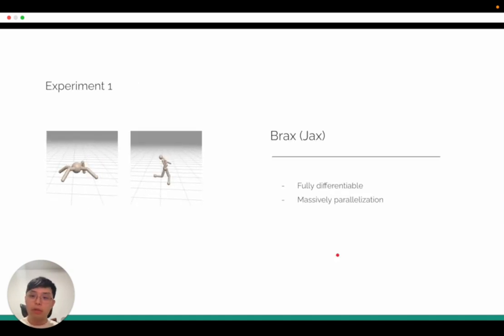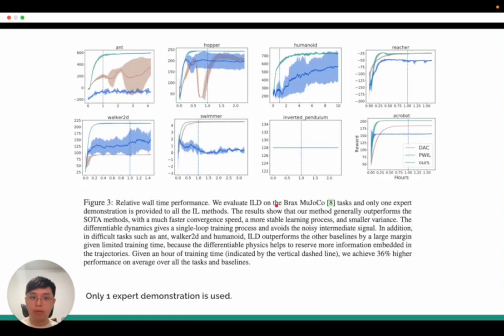And here we talk about the experiments we have. The first experiment we test is to use the Brax simulation, where it's fully differentiable and it supports massive parallelizations and it's Mujoco-like tasks. We have eight different tasks in this work.